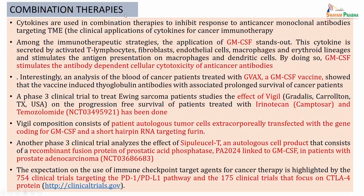Along with this, there are also combination therapies in place. Cytokines are used in combination therapies to inhibit response to anti-cancer monoclonal antibodies targeting the tumor environment. Among all the different immunotherapeutic strategies, the application of GM-CSF stands out. This cytokine - GM-CSF - is secreted by activated T lymphocytes, by fibroblasts, by endothelial cells, macrophages and erythroid lineages. GM-CSF will stimulate the antigen presentation on macrophages and dendritic cells, and by doing so it stimulates the antibody-dependent cellular cytotoxicity of anti-cancer antibodies.